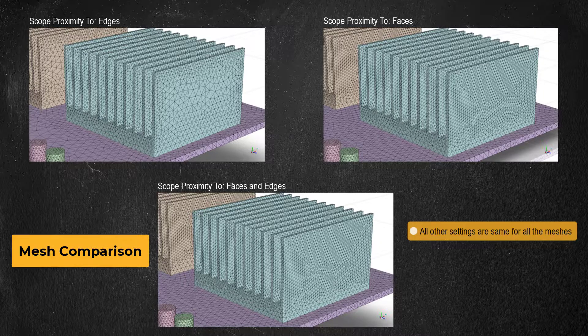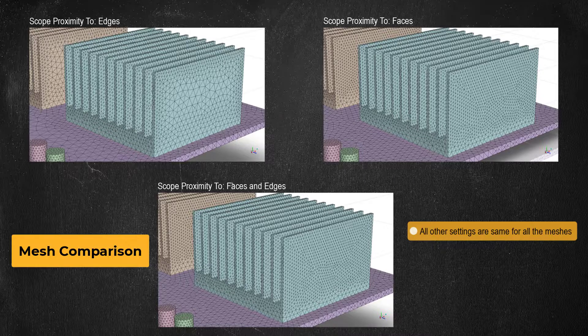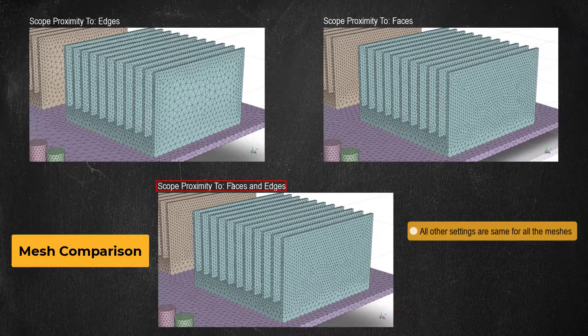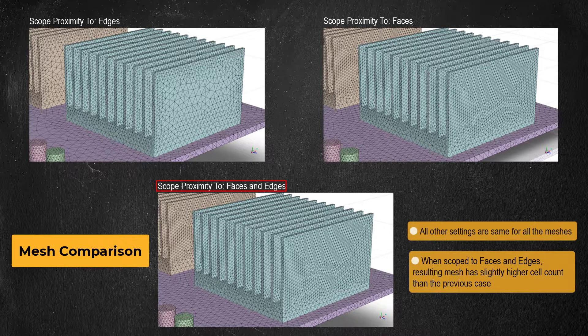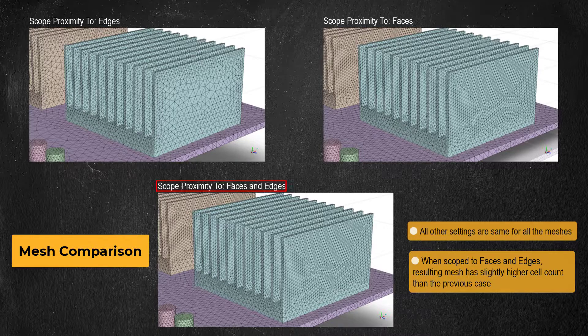When the scope proximity to is set to edges and faces, like for the mesh on the bottom, both edge to edge and face to face gaps are considered.